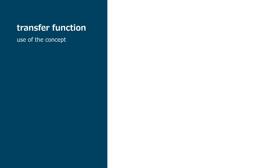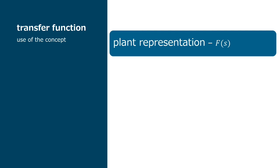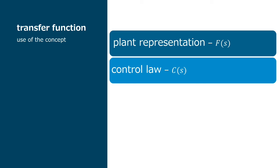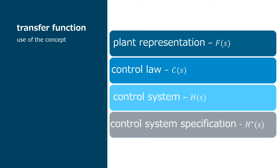We will use the concept of transfer function in four different places during the semester. First, to describe the client's plant, Fs. Second, to develop and describe the controller, Cs. Third, to compute the resulting control system, Hs. And finally, which in fact will be in the beginning of the process, we will use the transfer function to specify the desired behavior, H star S.